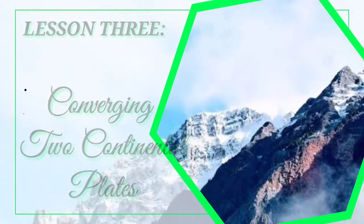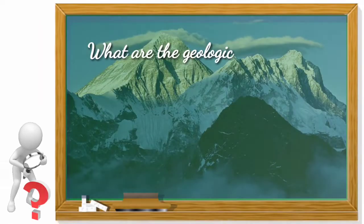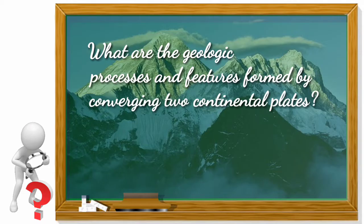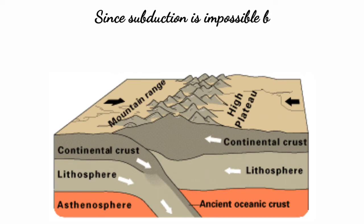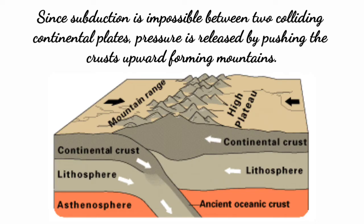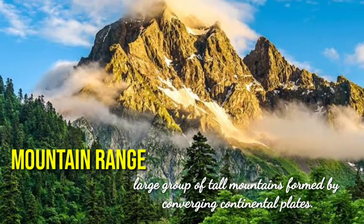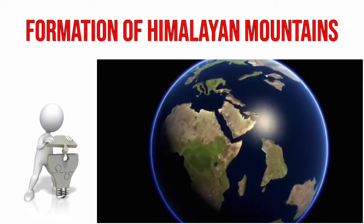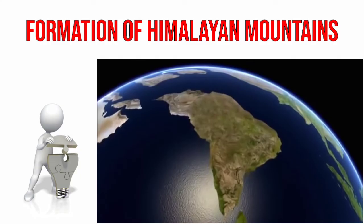Now let's proceed with lesson three: converging two continental plates. This type of convergence happens when a continental plate collides with another continental plate. When two continental plates converge, a collision zone is formed. Since subduction is impossible between two colliding continental plates, pressure is released by pushing the crust upward, forming mountains. Since subduction ceases for this particular type of convergence, no trench, no volcano, and no island arcs are formed. What is created is a large group of tall mountains called mountain ranges. The convergence of two continental plates leads to the formation of the greatest mountain ranges in the world, including the Himalayan mountains, where the highest mountain, Mount Everest, is located.